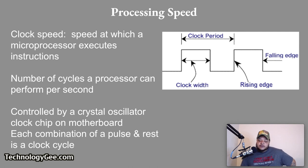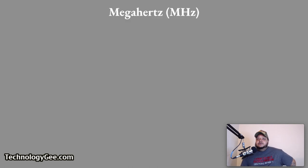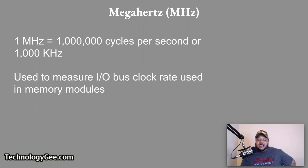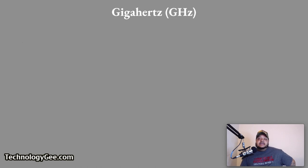The lowest speed we measure in is the megahertz. A megahertz is equal to 1 million cycles per second, or 1,000 kilohertz. Megahertz is also used to measure the input/output bus clock rate used by memory modules.